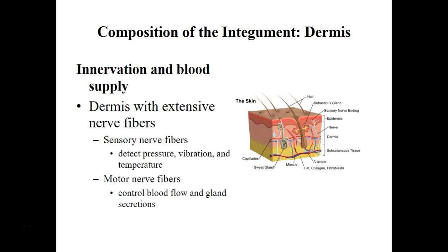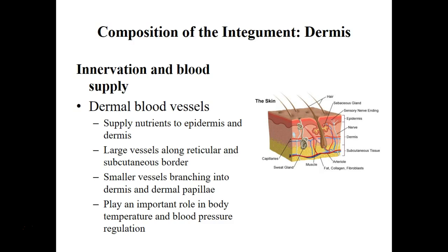If our body starts to overheat, our brain might tell our blood vessels to dilate so that blood flow goes to the surface of the skin, and then tells our sweat glands to secrete sweat. That's an example of how our nervous system and integument work together. We also have an excellent blood supply. The highly vascular regions feed the epidermis, which is composed of avascular epithelial tissues, and also feed structures within the dermis such as sweat glands and hair follicles, and can bring white blood cells to damaged tissue.